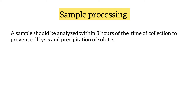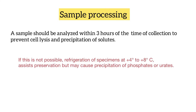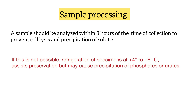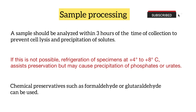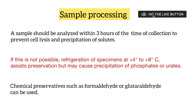If this is not possible, then refrigeration of the specimen can be done at 4°C to 8°C, which assists in preservation but may cause precipitation of phosphates or urates. Chemical preservatives such as formaldehyde or glutaraldehyde can also be used for preserving the urine sample.